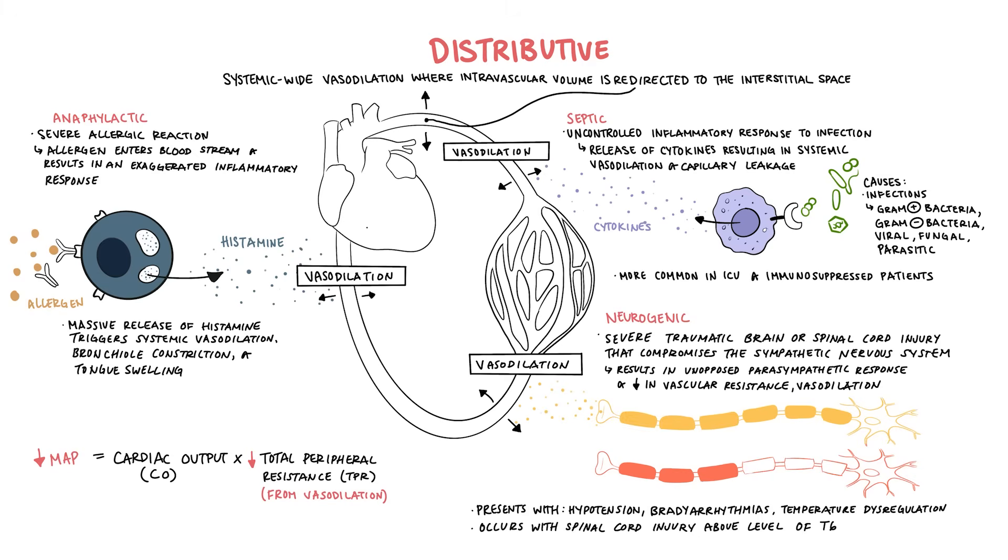In summary, distributive shock causes systemic vasodilation and therefore reduces total peripheral resistance which means it reduces mean arterial pressure and organ perfusion.